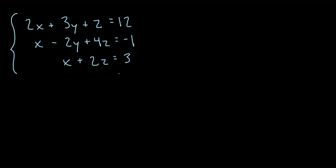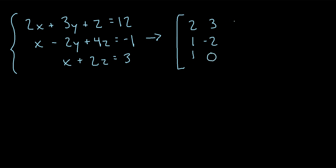So if we have this set of linear equations, the first step is to place these values into an augmented matrix. We create a matrix where the first column contains the coefficients for the x's — so that would be 2, 1, and 1. The next column contains the coefficients for the y's: 3, negative 2, and notice this last equation doesn't have a y value, so that's 0. The third column holds the coefficients for the z's: 1, 4, 2. And our augmented column contains the values on the right-hand side of the equal sign: 12, negative 1, 3.